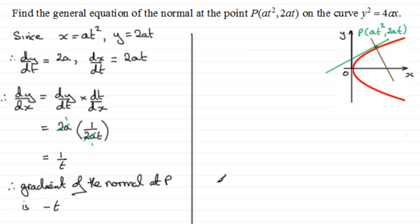So we're now in a position to find out the general equation of this normal. We can say that therefore the equation of the normal - let's just give a header up here, equation of normal. We'll say at P, at squared 2at. Now that equation is going to be y minus y1, y1 is 2at, and it's going to equal m the gradient, which is minus t, and that's multiplied by x minus x1. x1 is at squared.